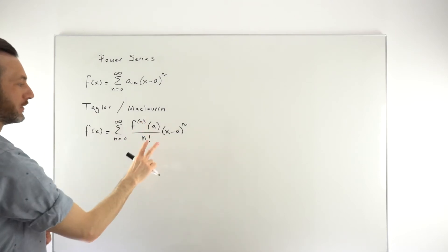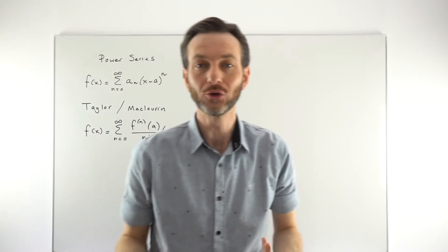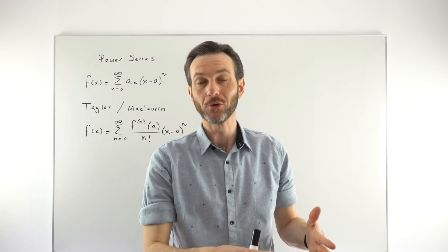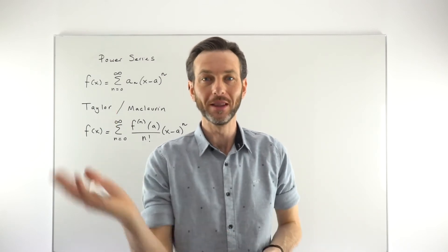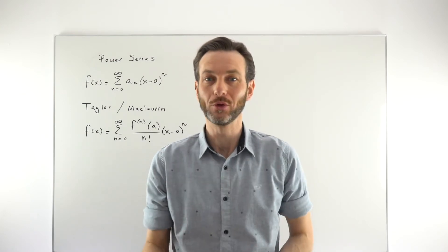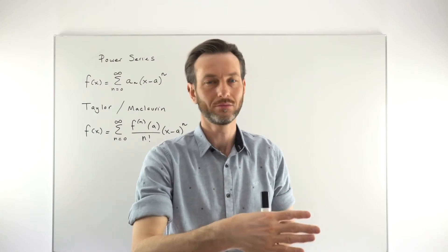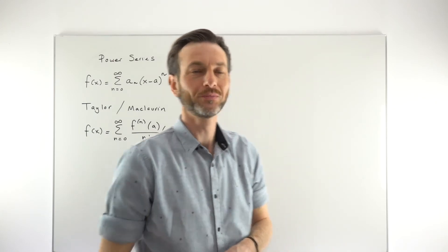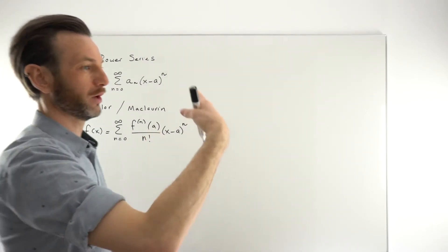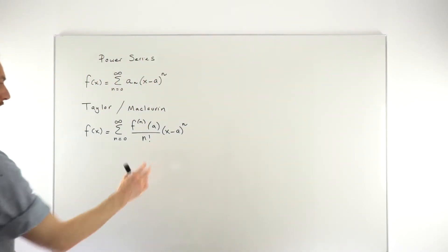Remember that n factorial just means n multiplied by n minus 1, n minus 2 — in other words, you're multiplying every number down to 1. So 4 factorial is 4 times 3 times 2 times 1. 7 factorial is 7 times 6 times 5, all the way down to 1. And in general, n factorial is n times n minus 1 times n minus 2, all the way down to 2 times 1.